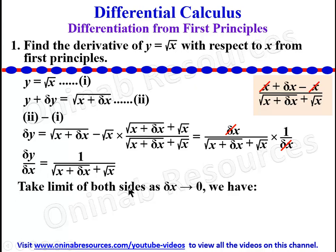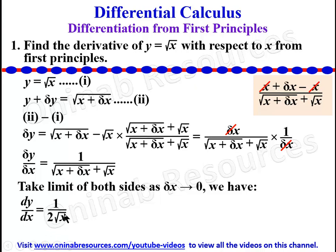Now the next thing is we find the limit of both sides as delta x approaches 0. The limit of delta y over delta x as delta x approaches 0 is dy/dx, which is equal to 1 over — if delta x is equal to 0 here, we will be left with root x plus root x, and that will give us 2 root x. That is the derivative of y equals root x from first principles.